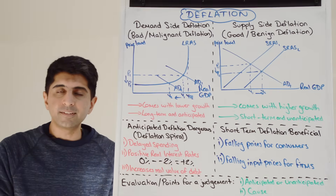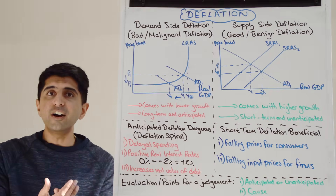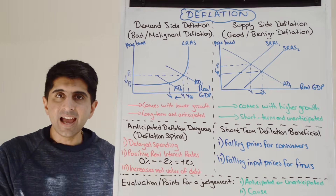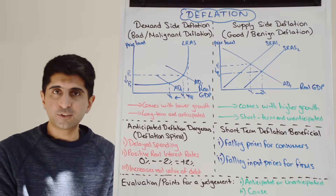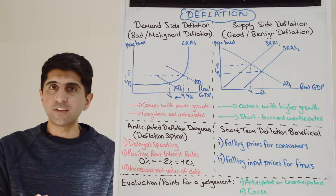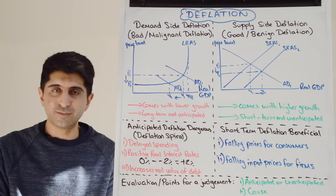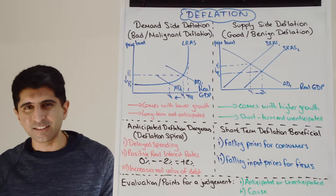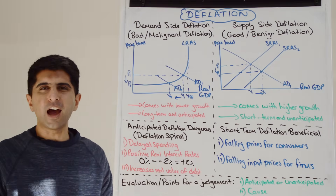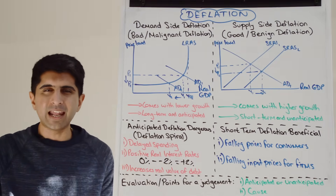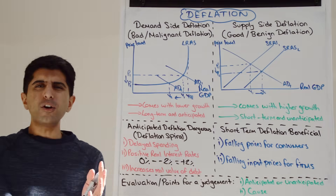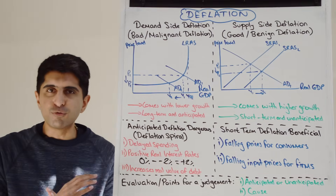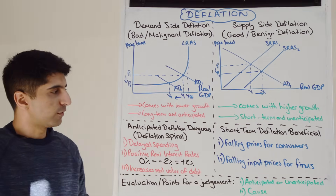This means consumers and businesses become averse to taking on debt. If they're not borrowing, there's not going to be as much consumer spending and not as much investment. That hits AD again — AD reduces, meaning lower growth and higher unemployment. We get this horrible deflationary spiral and the economy really suffers as a result.